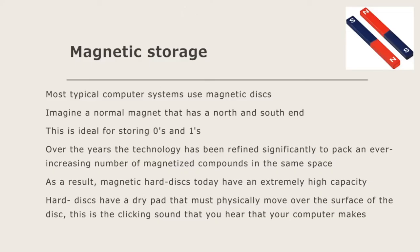Magnetic storage — most typical computer systems use magnetic discs. Imagine a normal magnet that has a north and south end; this is ideal for storing zeros and ones. Over the years the technology has been refined significantly to pack an ever increasing number of magnetized compounds in the same space.